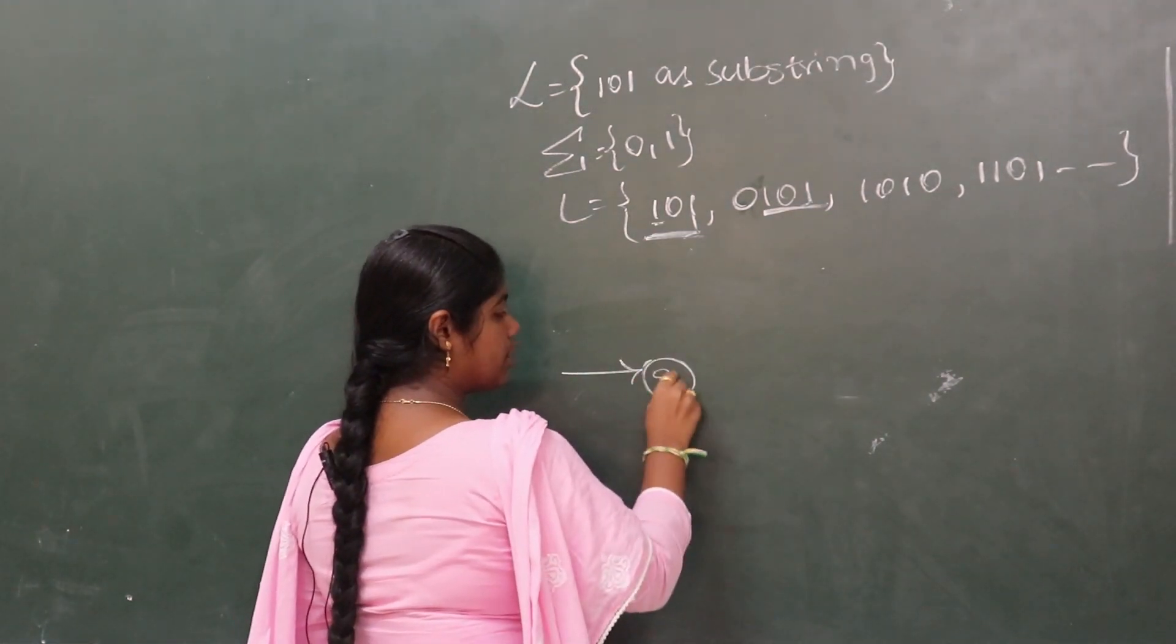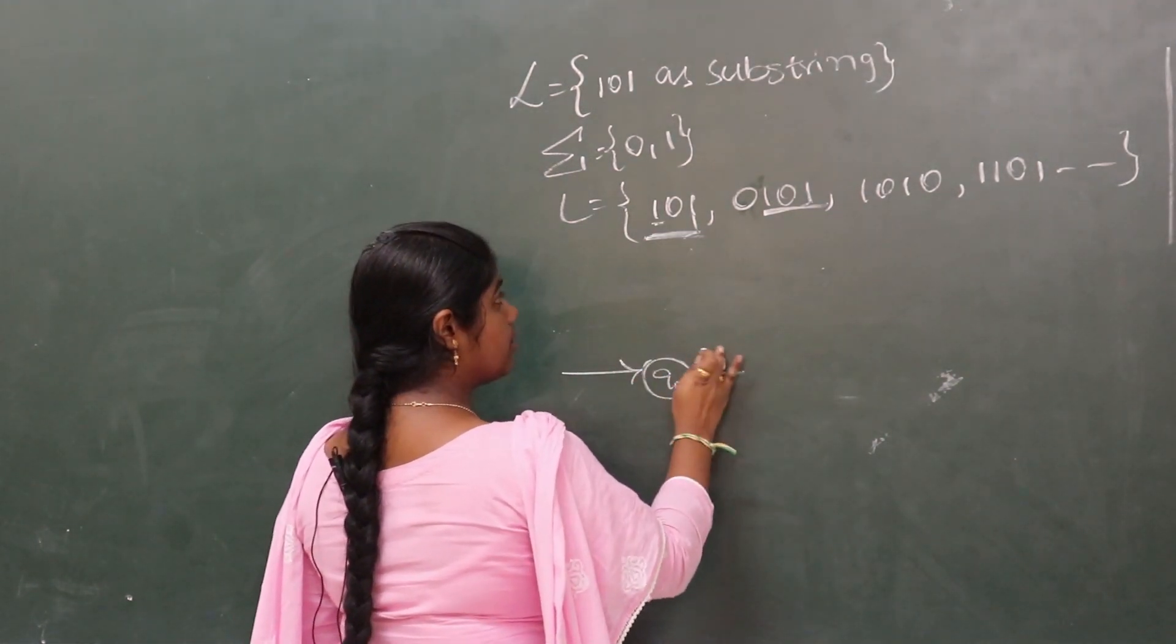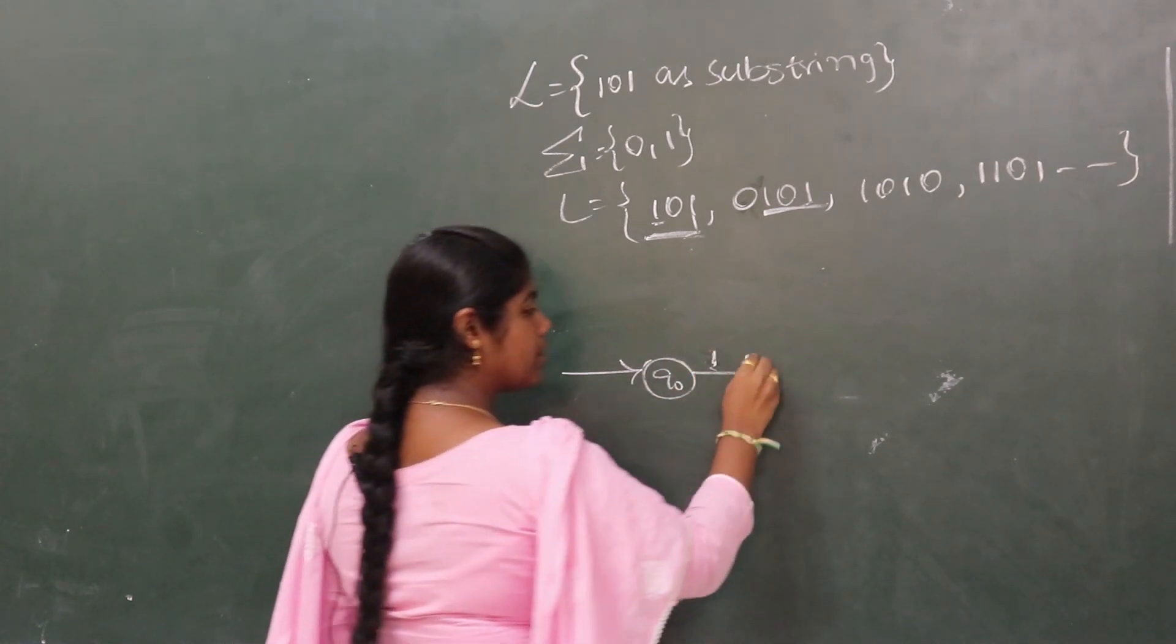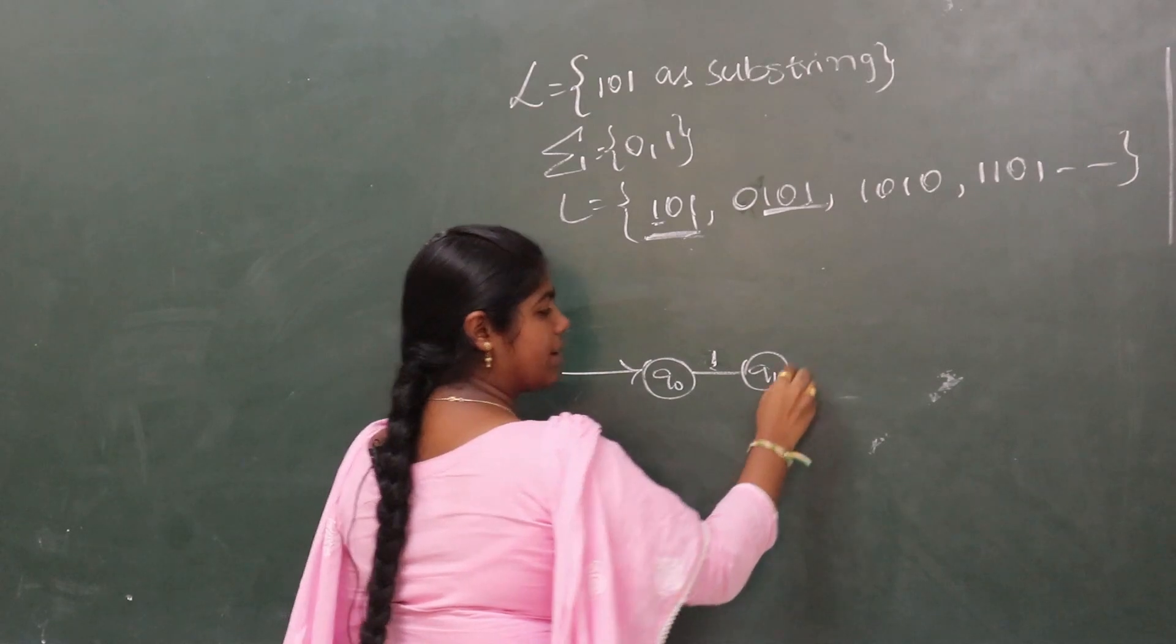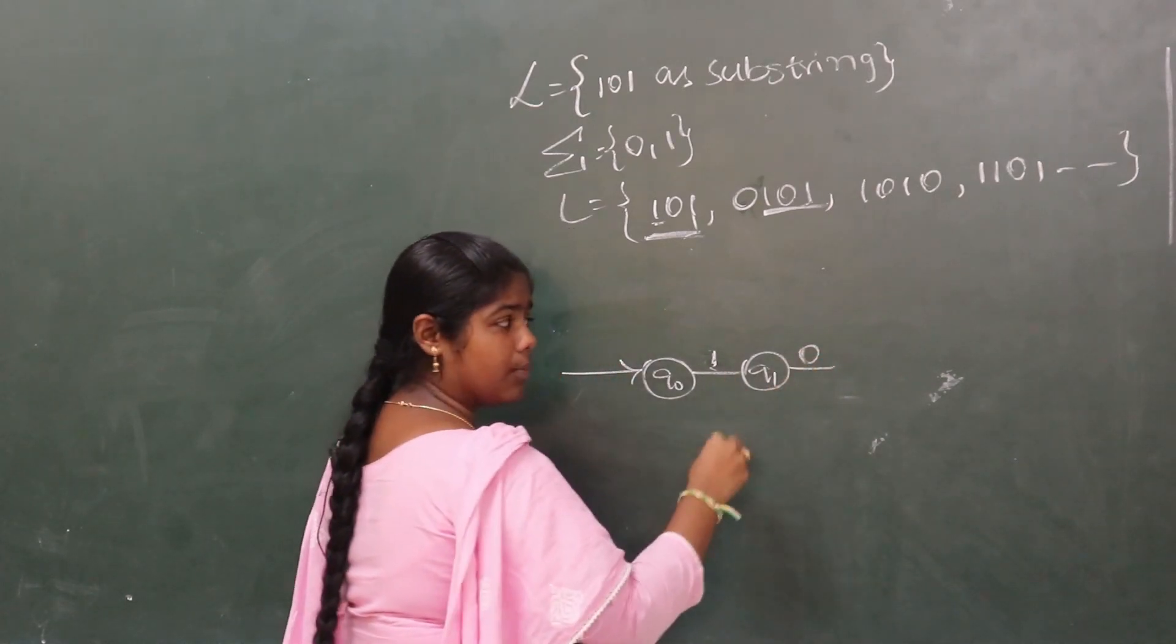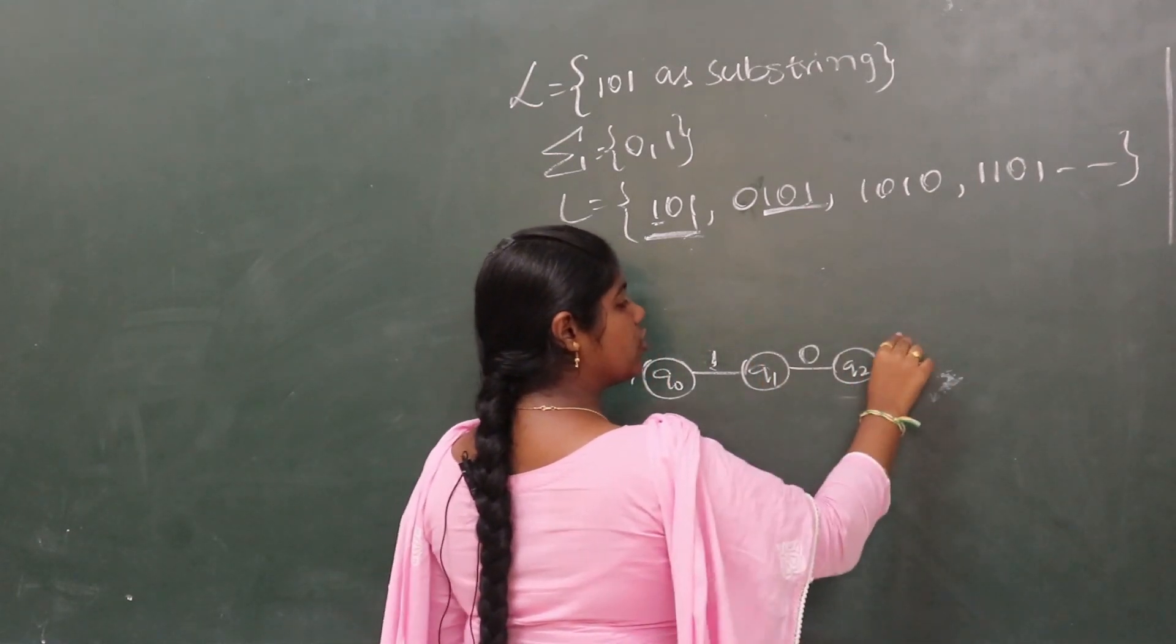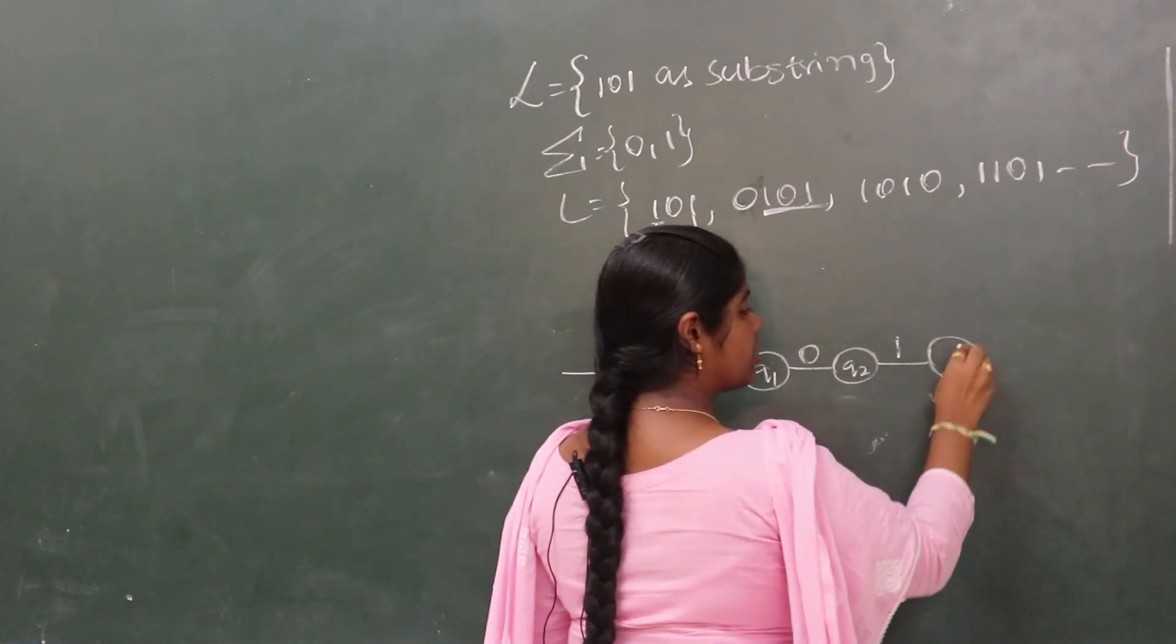let the starting state be q0. From q0, for the 101 substring, let us apply the input string 1. It goes to new state q1. From this state, on the input variable 0, the transition occurs and it goes to state q2.